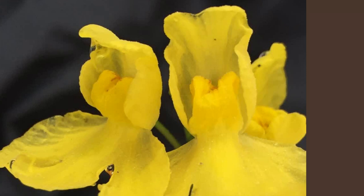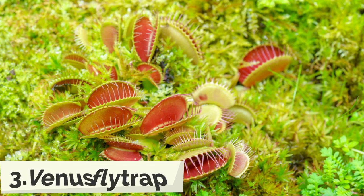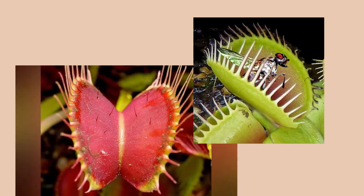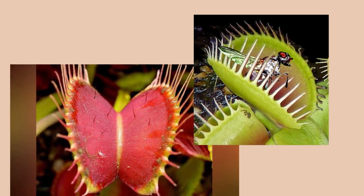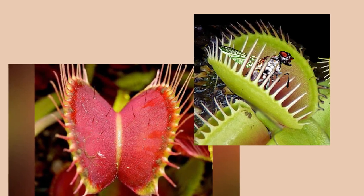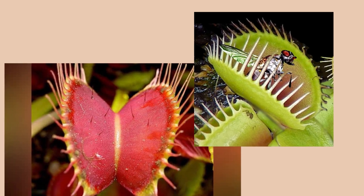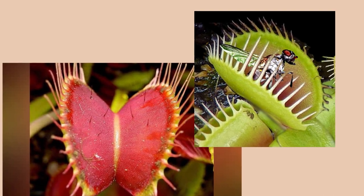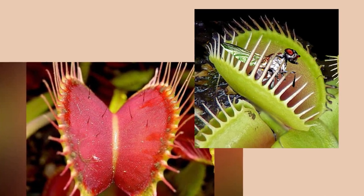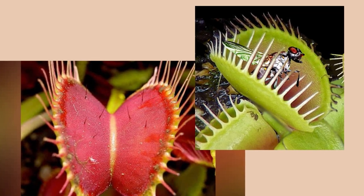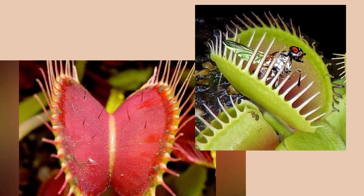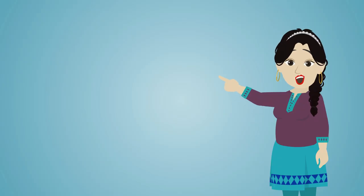Venus fly trap: the edges of this plant's leaves have long pointed hairs. The leaf blade is divided into two parts and the midrib acts as a hinge. When an insect comes in contact with it, the leaves snap shut, and the leaf secretes juices to digest the insect.